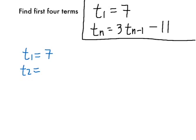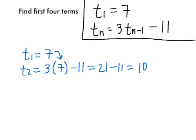For t₂, the definition tells us we need to do 3 times tₙ₋₁, or the previous term. Here's where that 7 comes in, and then subtract 11. In this case, it's 21 minus 11, so your t₂ or your second term is 10.